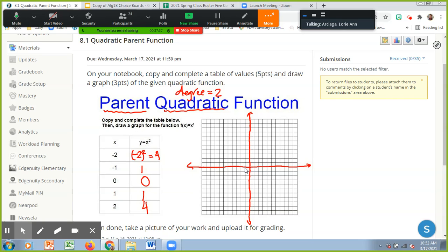Okay, so when x is negative 2, we go 2 to the left and then up 4. 1, 2, 3, 4. There you go. When x is negative 1 to the left, we go up 1.